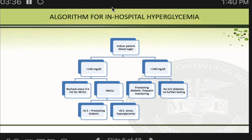Stress hyperglycemia or hospital hyperglycemia is a scientifically valid and insurance-valid term. When making discharge summaries, use this term rather than 'diabetes,' unless the patient already has pre-existing diabetes.